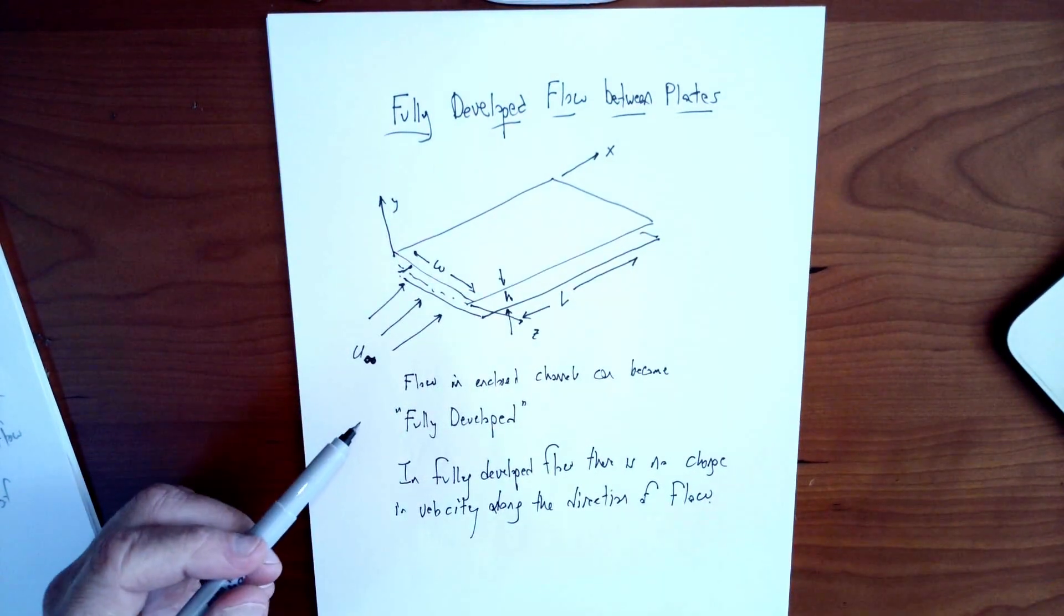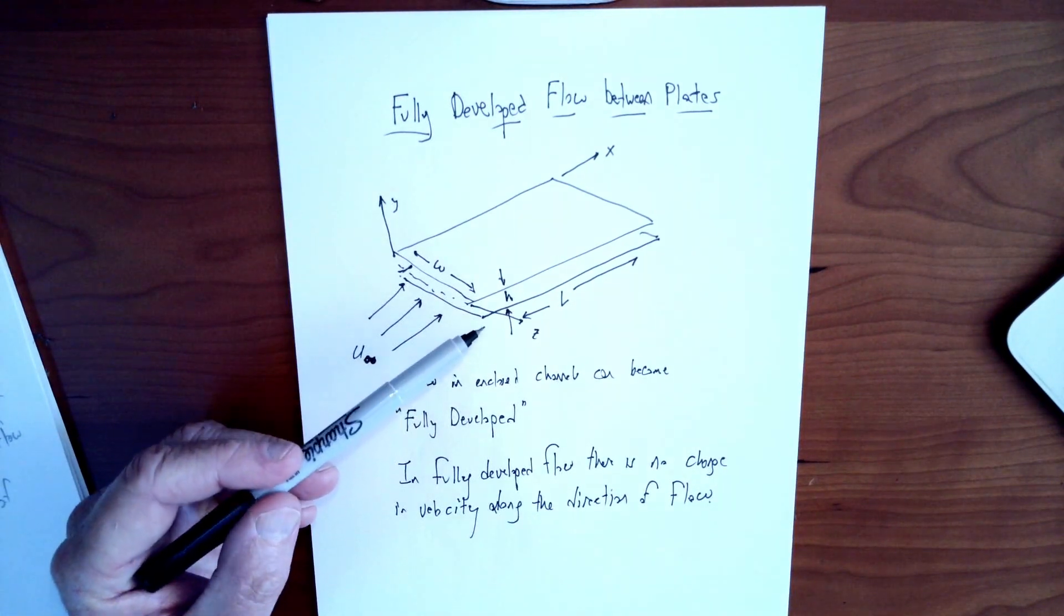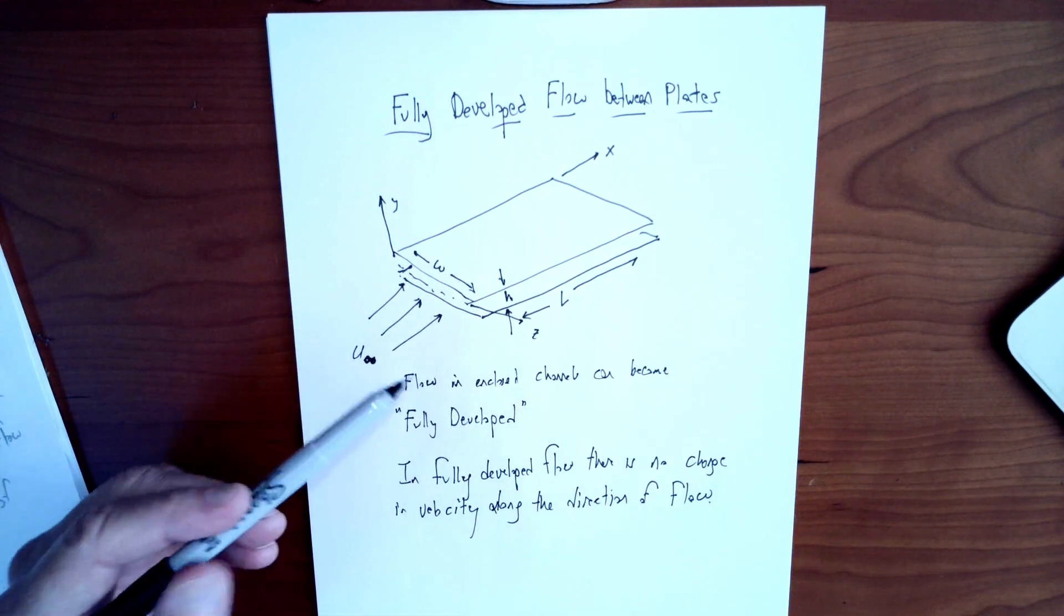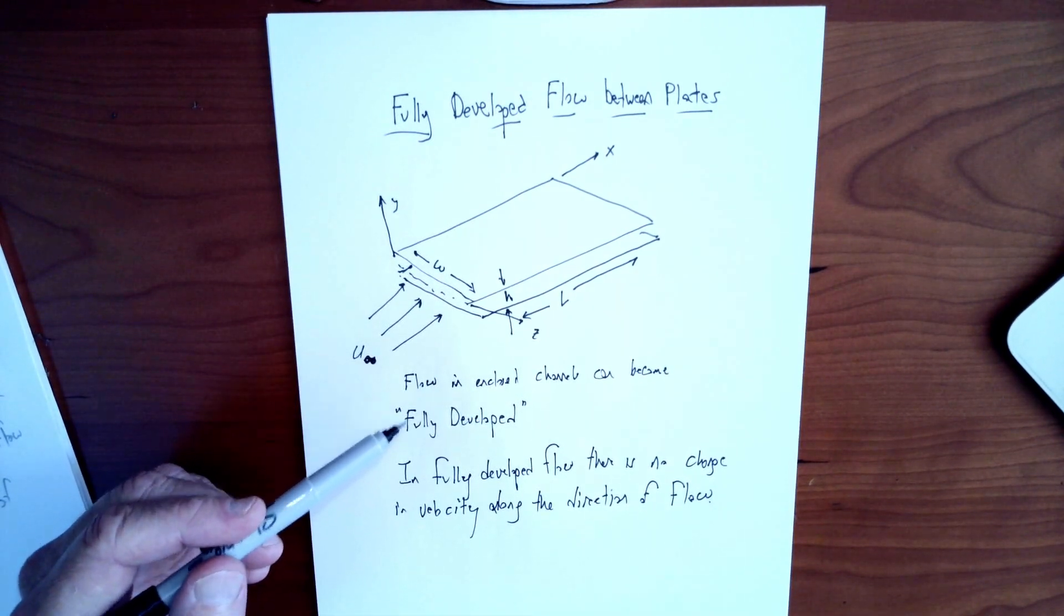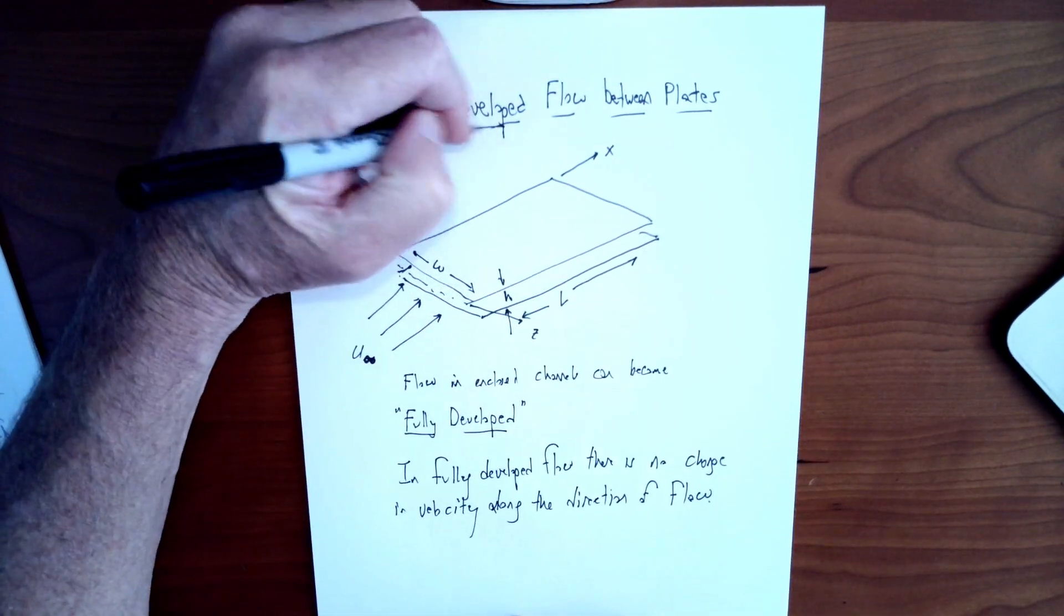What we find for flow that's in enclosed channels, such as between two plates or in a tube or pipe where the flow is enclosed, it often becomes fully developed. So this is a keyword, this fully developed flow.